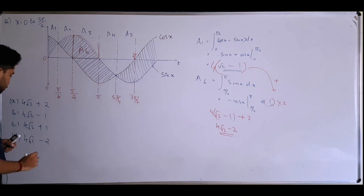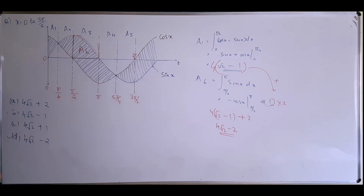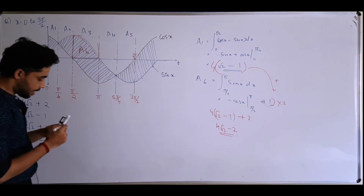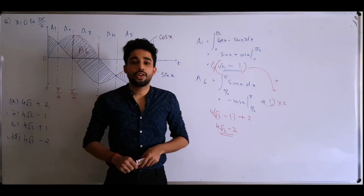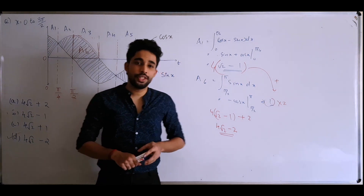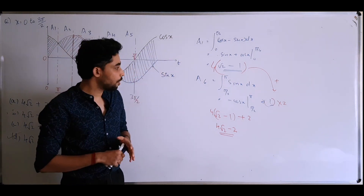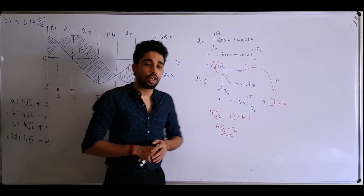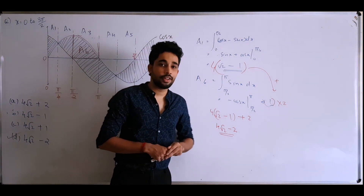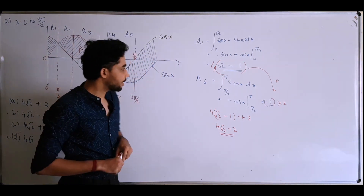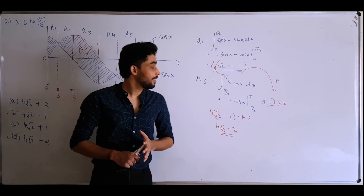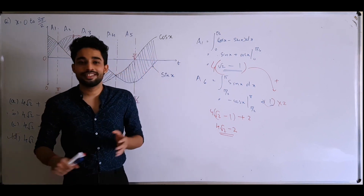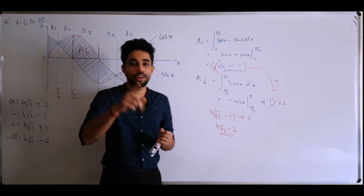So the correct answer is 4√2 − 2. I hope this video was useful for solving questions based on area under curves. Thanks for watching, and I'll see you in the next video.